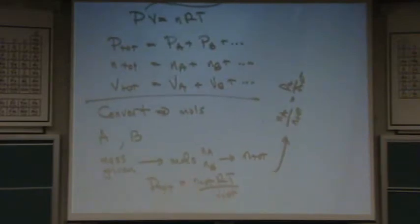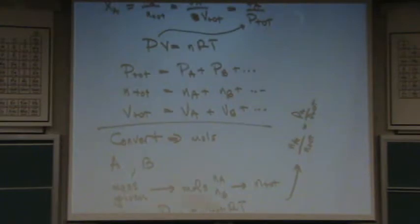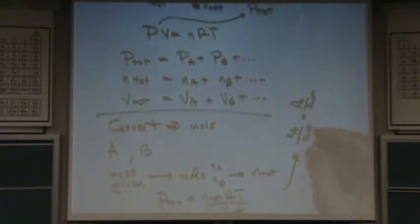And then you can use the one side of the equation, NA over N total equals PA over P total. So if you use that side of the equation from the equation I gave you earlier, the very top, Dalton's Law, then you can find the partial pressures.